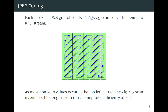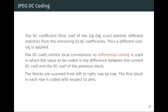The first element, the DC element, is treated a bit differently because the nature of the low-pass DC component is very different from the rest. For that we use difference coding — we look at the difference between two consecutive blocks, specifically the DC coefficient from one block to the next.